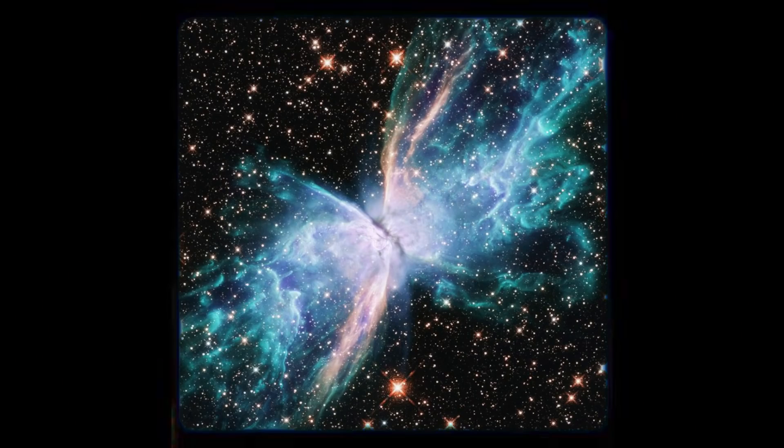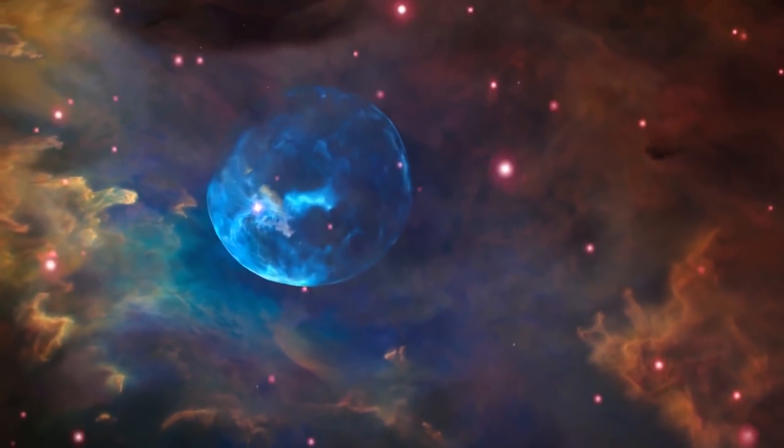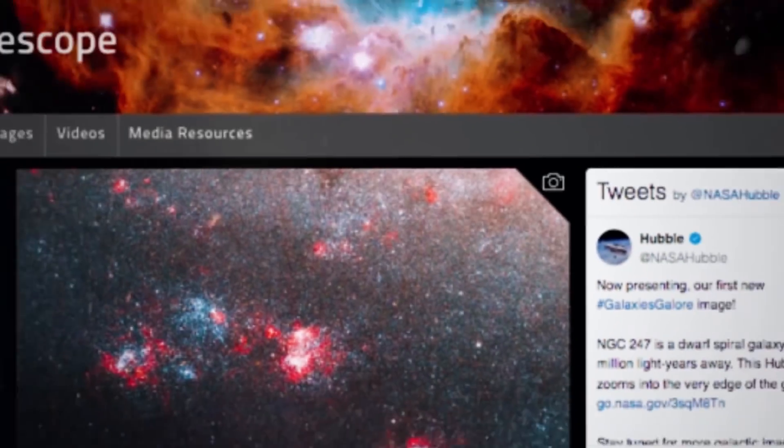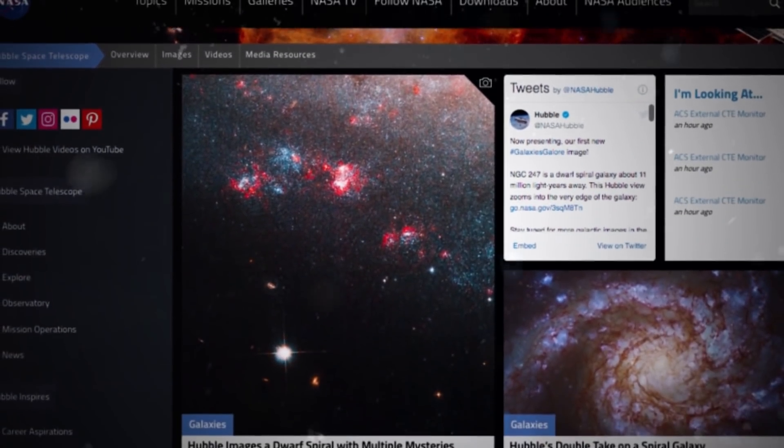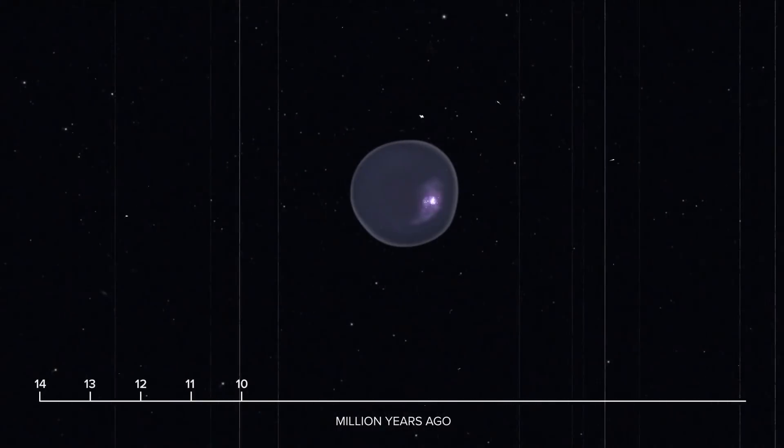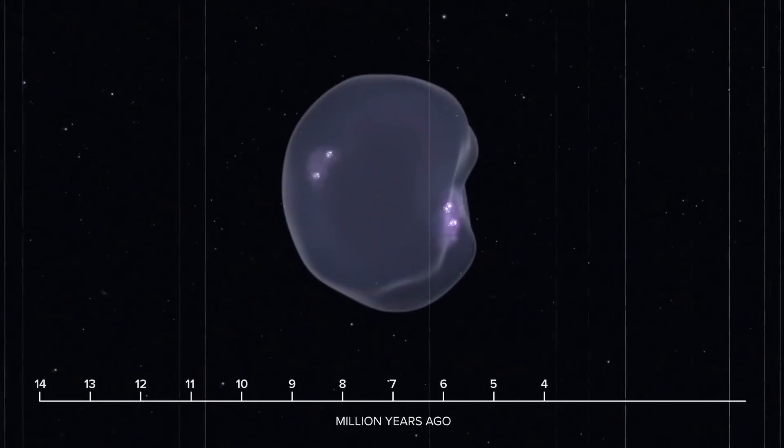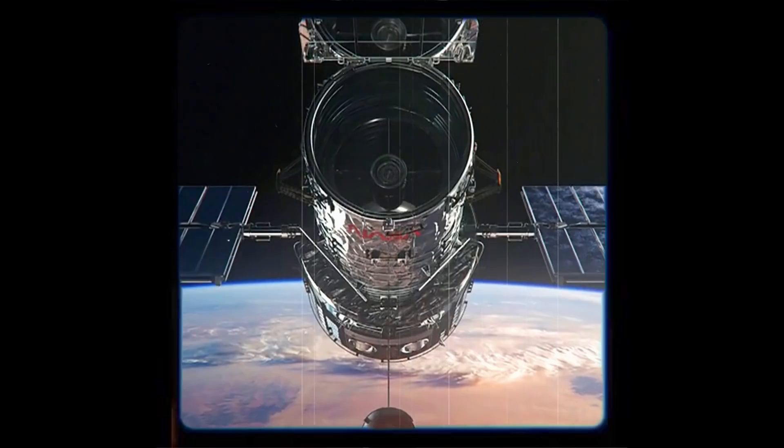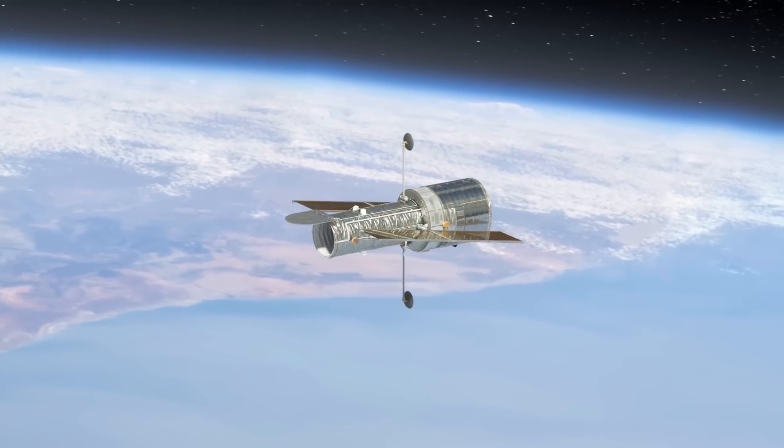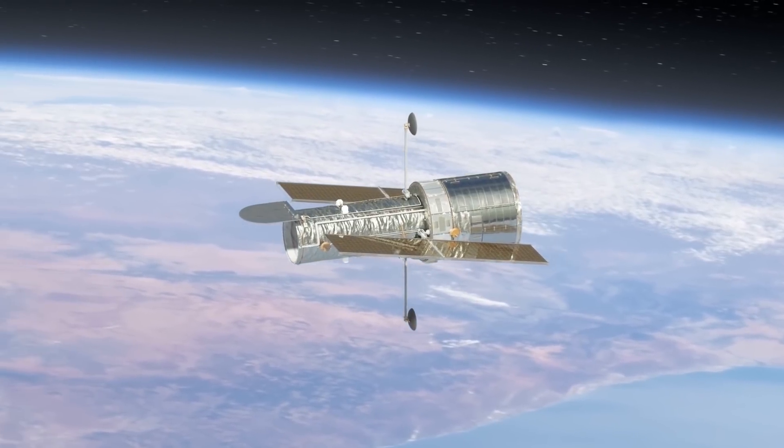These Hubble images are significant for several reasons. On the one hand, they're breathtaking photos that show everyone on Earth the wonders of space. All someone needs to do is go to NASA's website to observe a beautiful nebula or a complex star. These images also assist scientists in learning more about space and finding answers to pressing questions. Learning more about the universe through Hubble, TESS, or any other telescope is an awesome thing, no matter how you look at it.